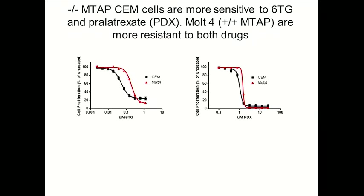We've used pralatrexate in our studies because, as Bruce Chabner and colleagues showed many years ago, methotrexate and presumably pralatrexate are converted to polyglutamates in cells, which then become inhibitors of de novo purine synthesis. We've also knocked down MTAP in MOT4 cells — they become sensitive — and added MTAP to CEM cells, making them more resistant.